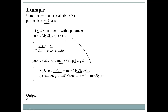We want to assign value 5 to the instance variable x, so we write 'this.x = x'. If we just write 'x = x' it may create a problem, which we will see when we execute. 'this.x' refers to the class variable and x is the local variable. After the constructor, we print 'myObj.x' which will print the value of the instance variable, and the output is 5.